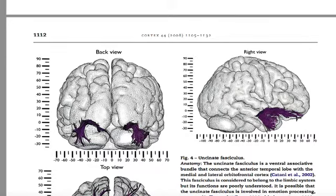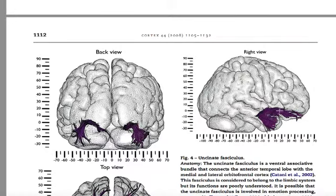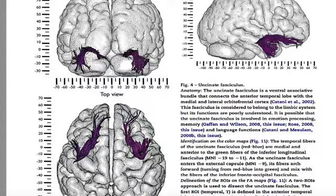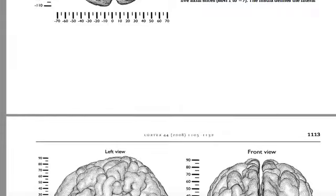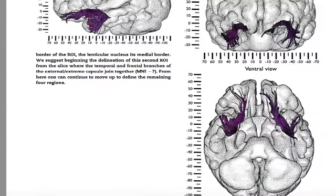The uncinate fasciculus can be divided into a dorsal part and a ventral part — the part that enters the temporal region, connects with the amygdala and the anterior temporal area. The dorsal part joins with fibers coming from language pathways, that is, from the frontotemporo-occipital fasciculus. These fibers are more linked to language but are connected to the other fibers — hence there is a mechanism of emotional regulation called reappraisal, which implies a restructuring, a new interpretation of an emotional event, in which the uncinate fasciculus is involved.